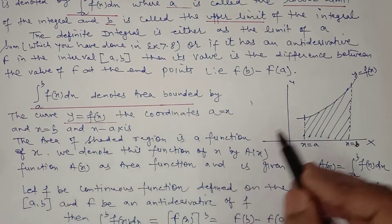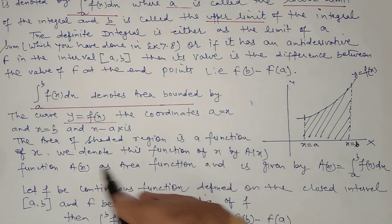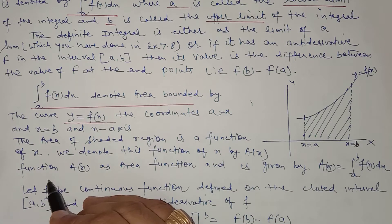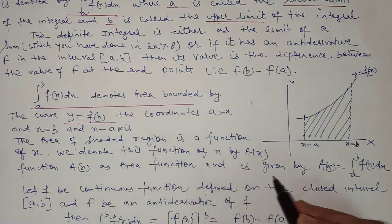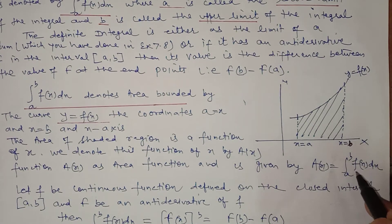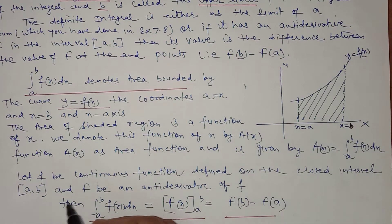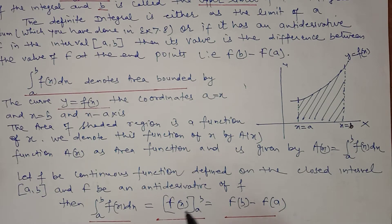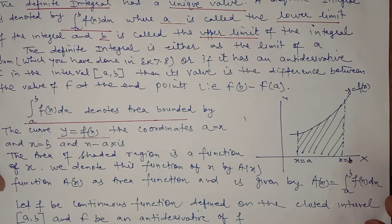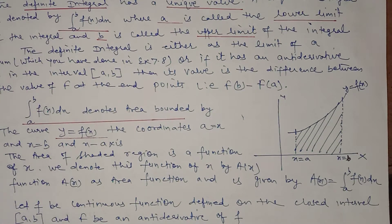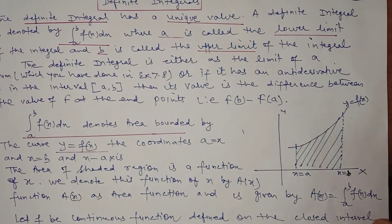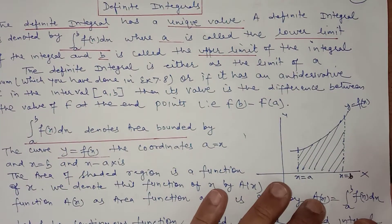The area of the shaded region is a function of x, where y = f(x). We denote it by the area function capital A(x), given by the definite integral from a to x of f(x) with respect to x. If f is a continuous function defined on the closed interval [a, b] and capital F is the antiderivative of f, then the definite integral from a to b equals F(b) minus F(a). So the definite integral has a unique value and denotes the area bounded by the curve between the two given limits and the x-axis.